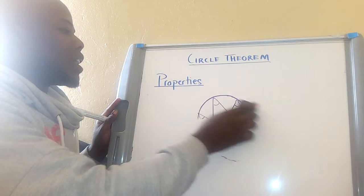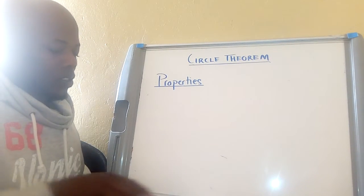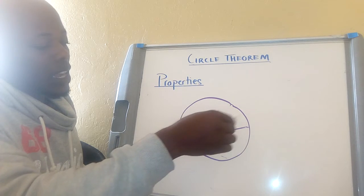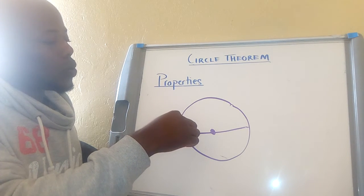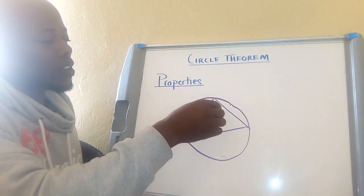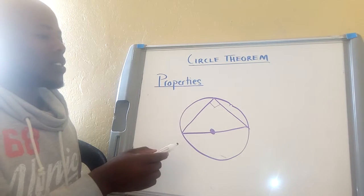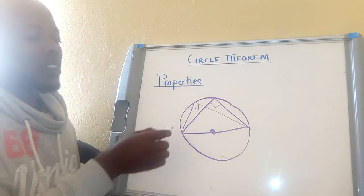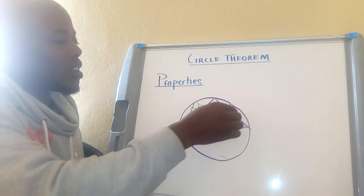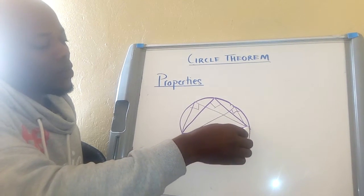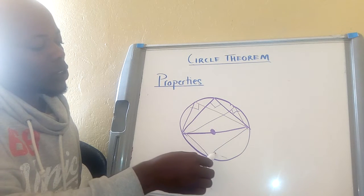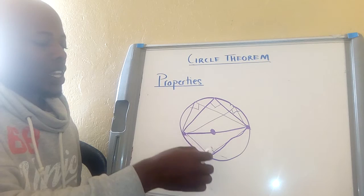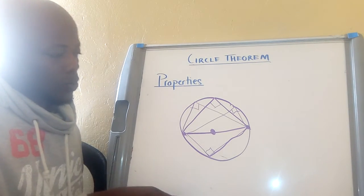Another property is angles from the diameter. There is a diameter here — the line passing through the center of the circle. Whichever angle is formed touching the circumference will be 90 degrees. Any angle coming from the diameter that touches the circumference will be 90 degrees. As long as it touches the diameter at one point and the circumference at the other, that angle will be 90 degrees.